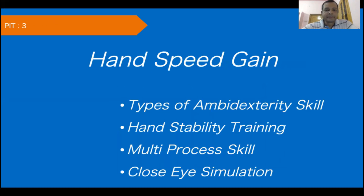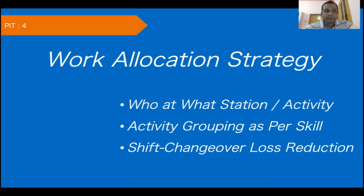PIT 3 is the hand speed game. Since many operators will be quite new to the shop floor, we'll look at what kind of skill and ambidexterity training can help them improve hand skill and speed by almost 200% in two to three days. We'll also cover hand stability training, multi-process training at one time, and flow size simulation to help operators understand the intricacies of different processes.